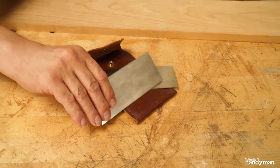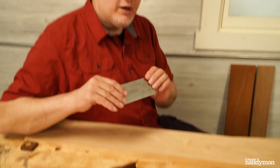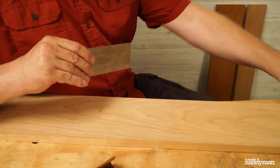Now these are called card scrapers. Back before sandpaper was ever a thing, we used steel to smooth the surface of the wood.